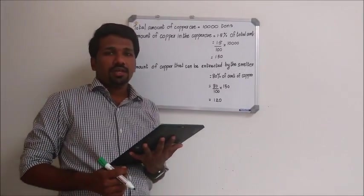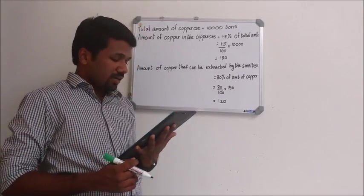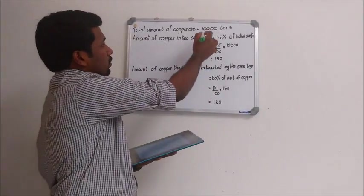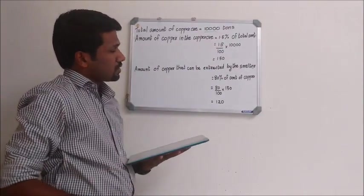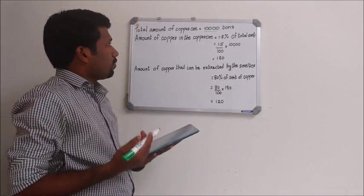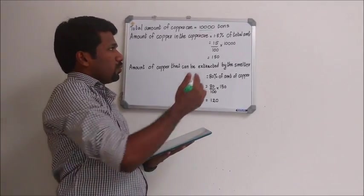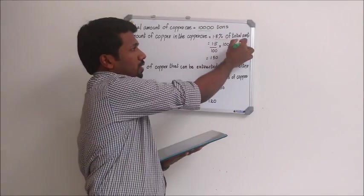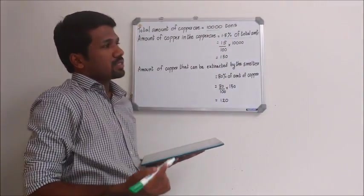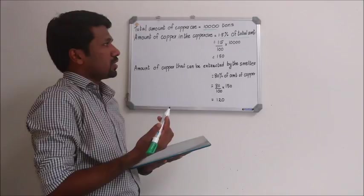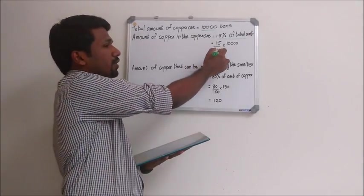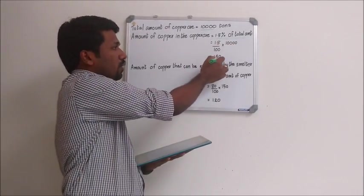This is a simple question. In the question itself, it is given that total amount of copper ore is equal to 10,000 tons. We can see that amount of copper in the copper ore is equal to 1.5% of the total amount. We know that total amount is 10,000 tons. So 1.5% of 10,000 tons, that is 1.5 by 100 into 10,000, equal to 150.